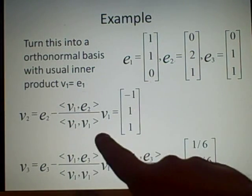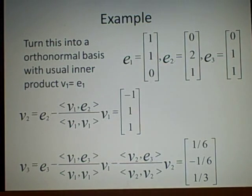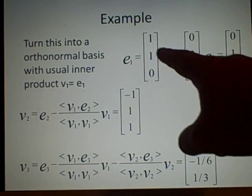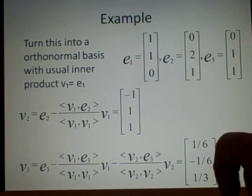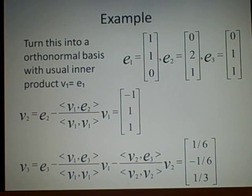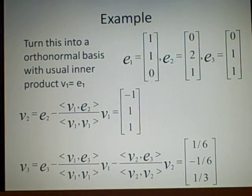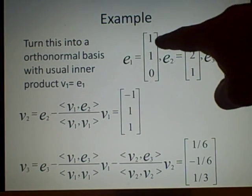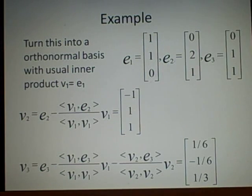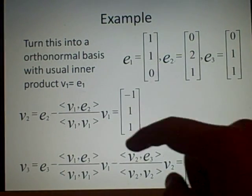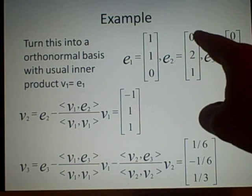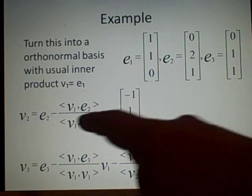So, V2 is E2 minus this, which is V1, E2, V1, V1, times V1. Now, to work this out, we're using the dot product. So, V1 dot E2, V1 is this, so dot with E2, it's 1 times 0, which is 0, 1 times 2, which is 2, 0 times 1, which is 0. So, this is 2, V1, V1, we do V1 dotted with itself, so it's 1 times 1, which is 1, plus 1 times 1, which is 1, which is 2. So, now we have 2 divided by 2, which is 1. So, now we have E2, which is this, minus V1. So, this minus this is minus 1, 1, 1, which is this. So, this is our V2.